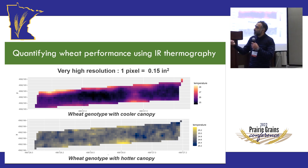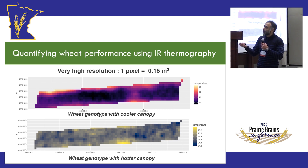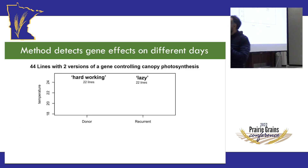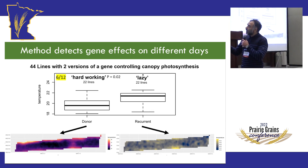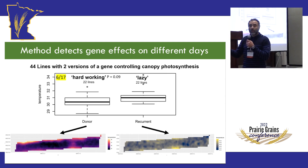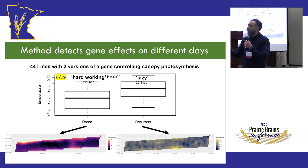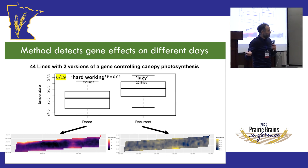The result: the lazy ones are significantly warmer than the hard-working ones. This is data from a single flight, and it stays consistent over different days with slightly different environmental conditions. The hypothesis holds and works for single-row plots at these numbers of lines.